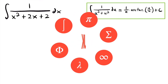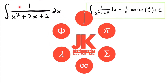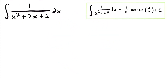When you want to solve an integral of a rational function where you have a quadratic function in the denominator, one method that can be useful is to complete the square for that quadratic function. Doing so will allow us to use the integration rule for the inverse tangent function, or the arc tangent function.